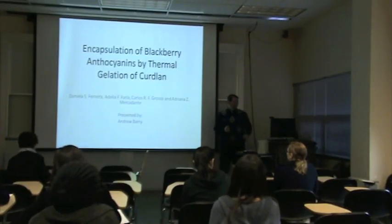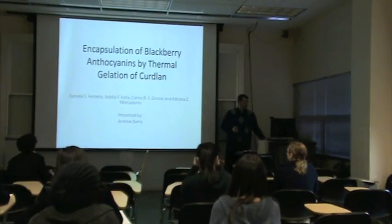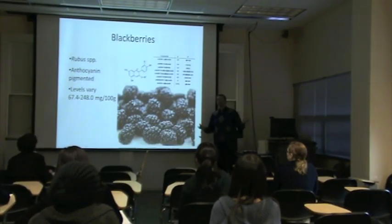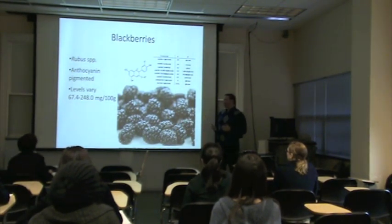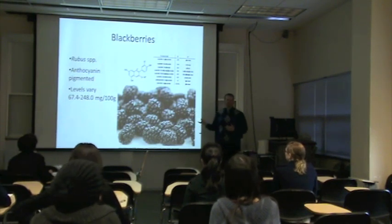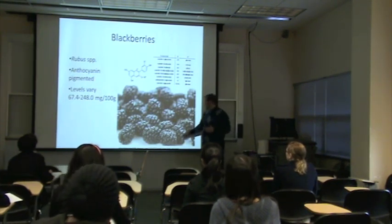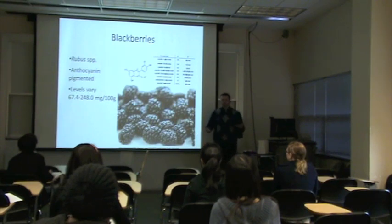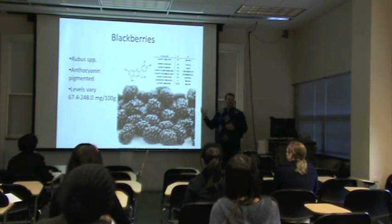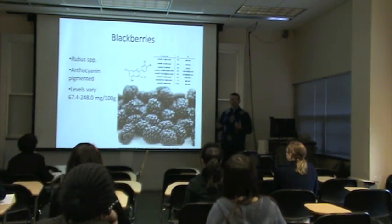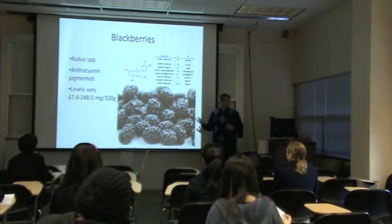Anthocyanins through the thermal gelation of curdlan. A little background information so everybody knows what we're going to be talking about. Blackberries are a couple different species of plants that belong to the Rubus genus. The color responsible for this is from anthocyanins, water-soluble pigments, the levels of which can vary greatly in a blackberry — anywhere from about 67 milligrams per 100 grams all the way up to 250.